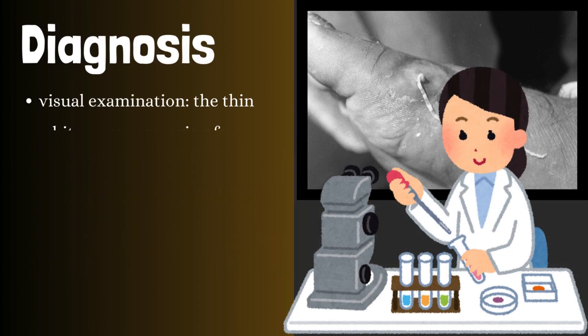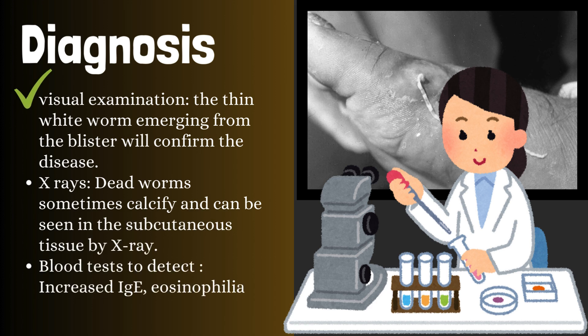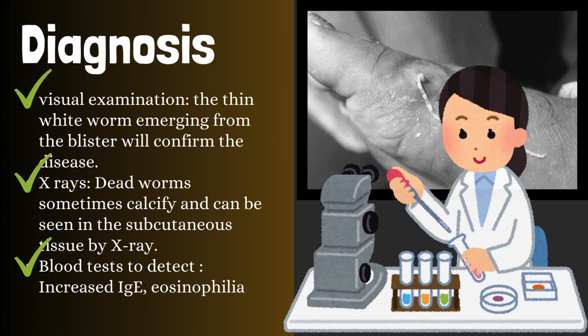Diagnosis: Visual examination — the thin white worm emerging from the blister will confirm the disease. X-rays — dead worms sometimes calcify and can be seen in the subcutaneous tissue by X-ray. Blood tests to detect: they will show increased IgE and eosinophilia.